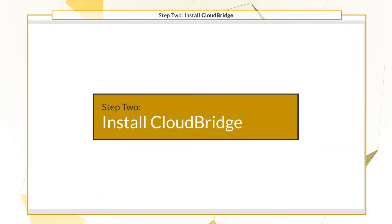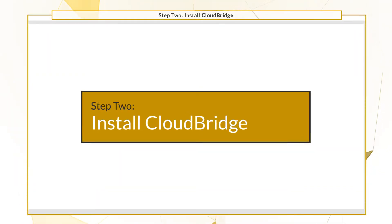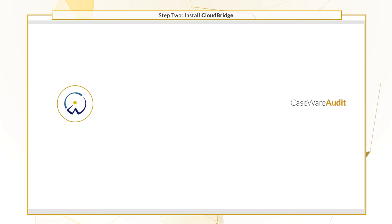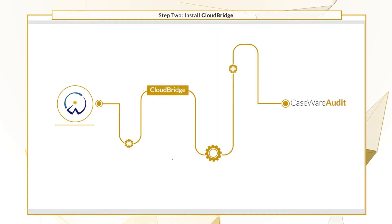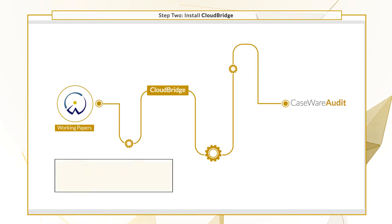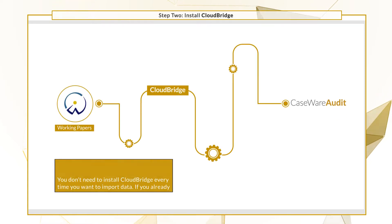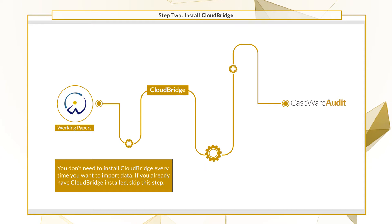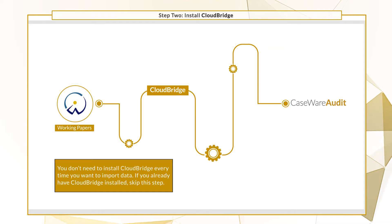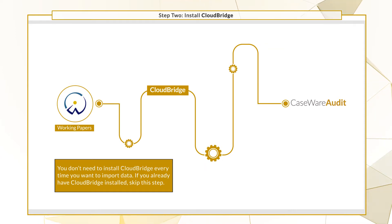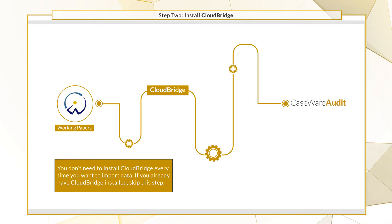Next, install CloudBridge. This is a utility that enables you to transfer data from Working Papers to Audit. Note that you don't need to install CloudBridge every time you want to import data. If you already have it installed, you can skip this step.